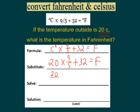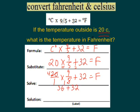Let's solve this. I'll make 20 a fraction and multiply by 9 over 5. Remember, order matters here — multiplication before addition, so remember PEMDAS. We can cancel, and 4 times 9 is 36. Then we add 36 and 32 to get 68 degrees Fahrenheit. So 20 degrees Celsius equals 68 degrees Fahrenheit. That's how you use unfamiliar formulas — just remember plug and chug.